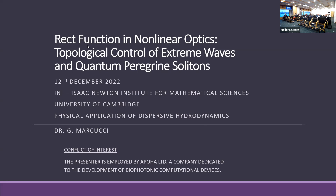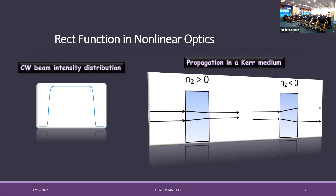So, the rect function in linear optics — what is a rect function? Let me reconsider what we mean. We are talking of a continuous wave laser beam with an intensity distribution that is a rect function. What you see here is not a true rect function; it's a super-Gaussian — a trick for better simulation, having a smooth function. We consider the propagation of this CW beam in a Kerr medium, which is a medium with an intensity-dependent nonlinearity that can be focusing or defocusing depending on the Kerr coefficient.